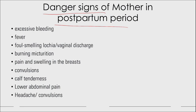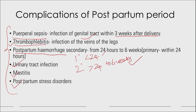The danger signs in the postpartum mother include: excessive bleeding, presence of fever, swelling, foul-smelling vaginal discharge, burning micturition, pain and swelling of breasts, convulsions, calf tenderness, lower abdominal pain, and headache. These danger signs correspond to complications such as puerperal sepsis, thrombophlebitis, postpartum haemorrhage, urinary tract infection, mastitis, and postpartum stress disorders.